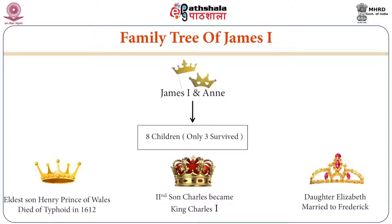On the screen there is a family tree of James I. His wife Anne had eight children, but only three survived: his eldest son Henry, Prince of Wales, died of typhoid in 1612; his second son Charles became King Charles I; and his daughter Elizabeth married Frederick. These are very important figures in the history of England.